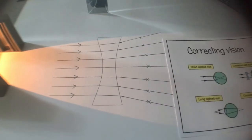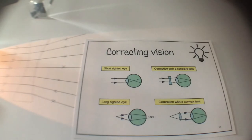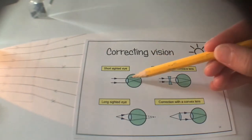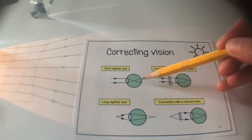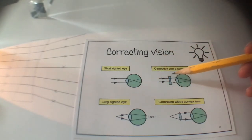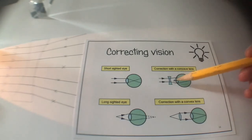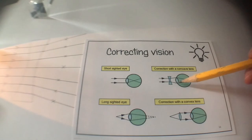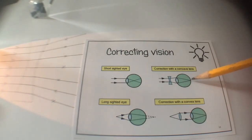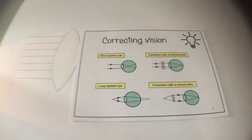Looking back at the diagram: with short-sightedness the focal length is too short. We need all the beams of light to converge at the same point on the retina. With the concave lens in place, it refracts the light outwards, spreading it so it has a greater distance to travel before converging, meaning that focal point lands on the retina at the back.